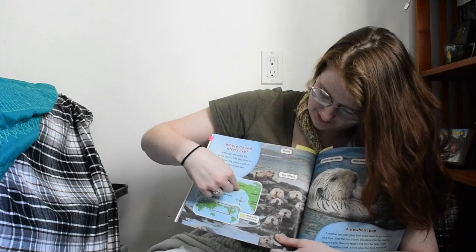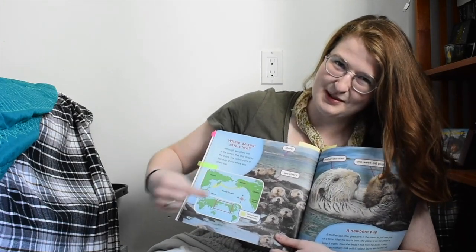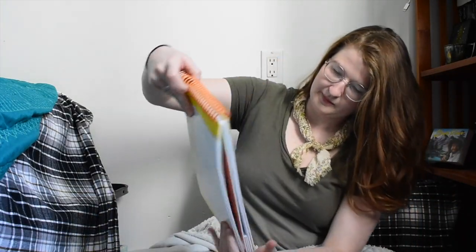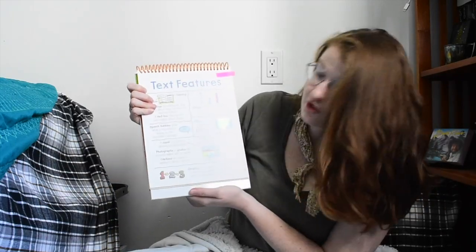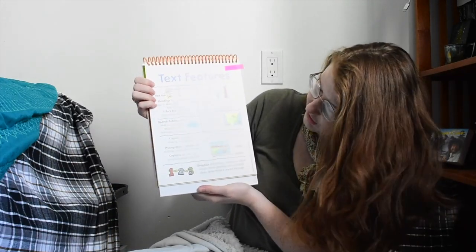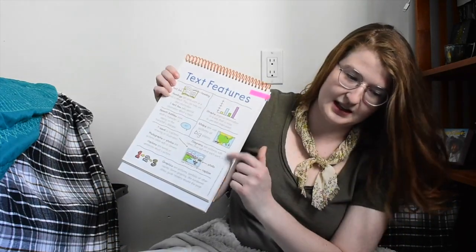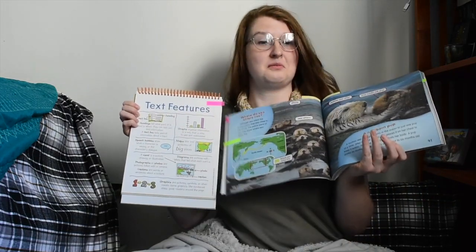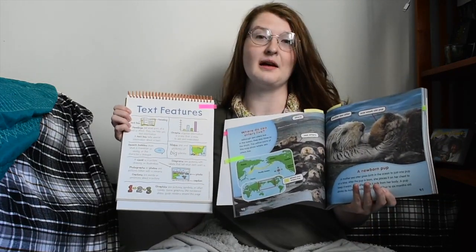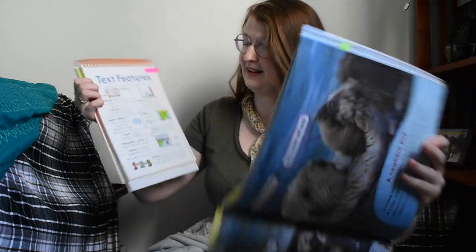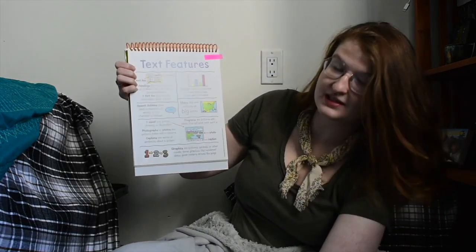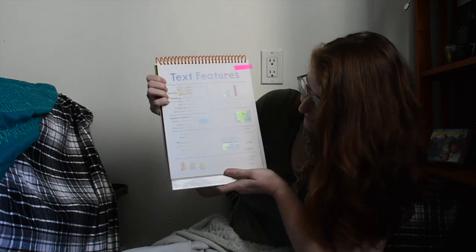Fun fact — sea otters can be found here in Washington! A visual is a picture, drawing, or illustration. It looks like most of this story has pictures in it. Photographs or photos are pictures taken with a camera.